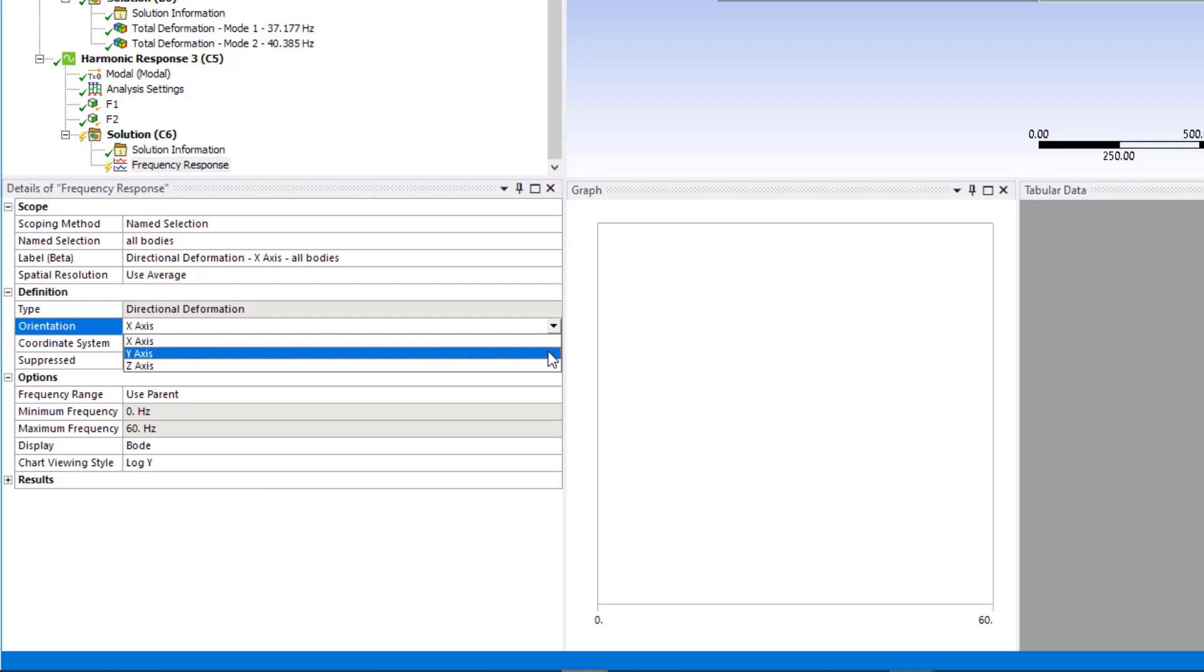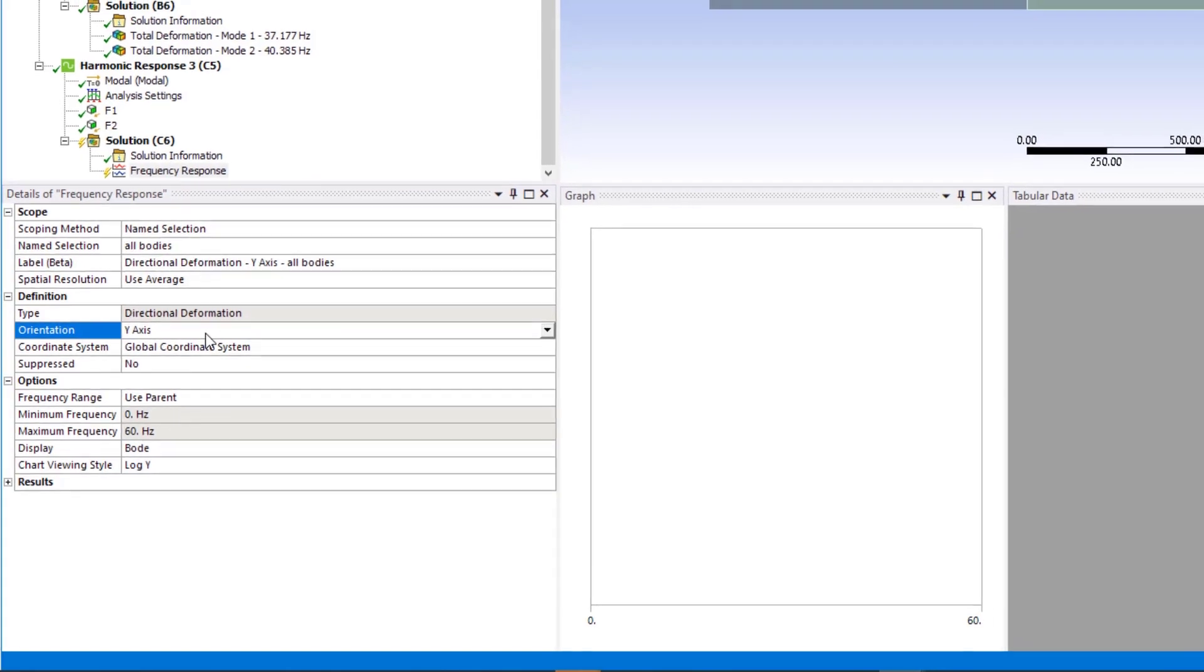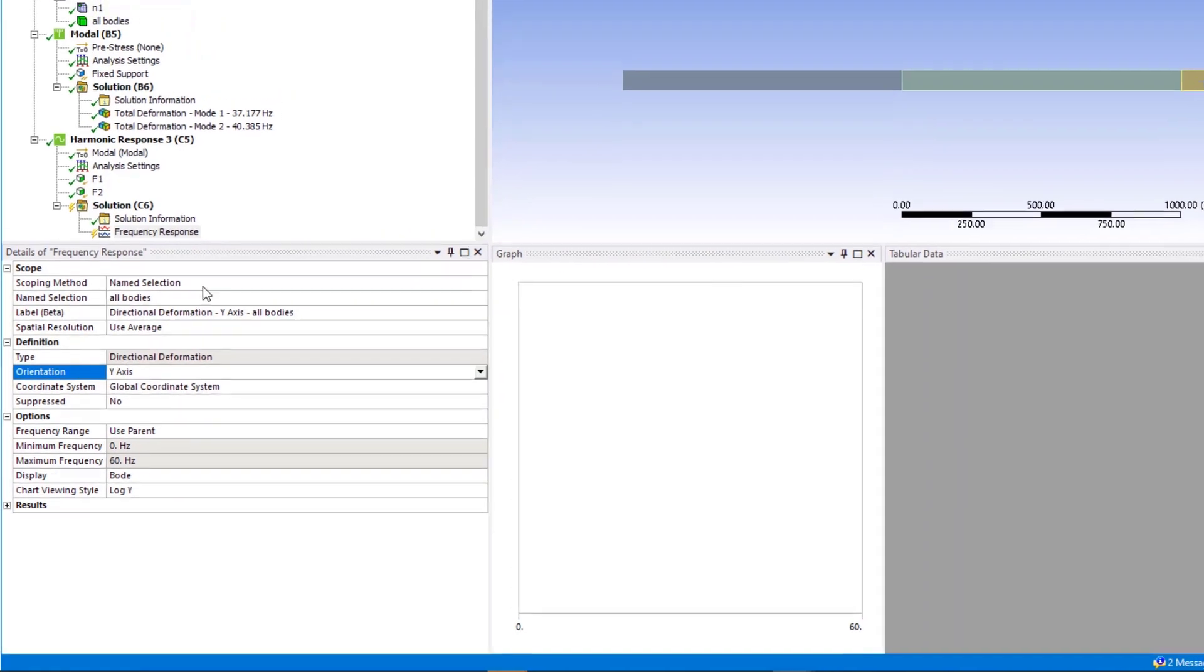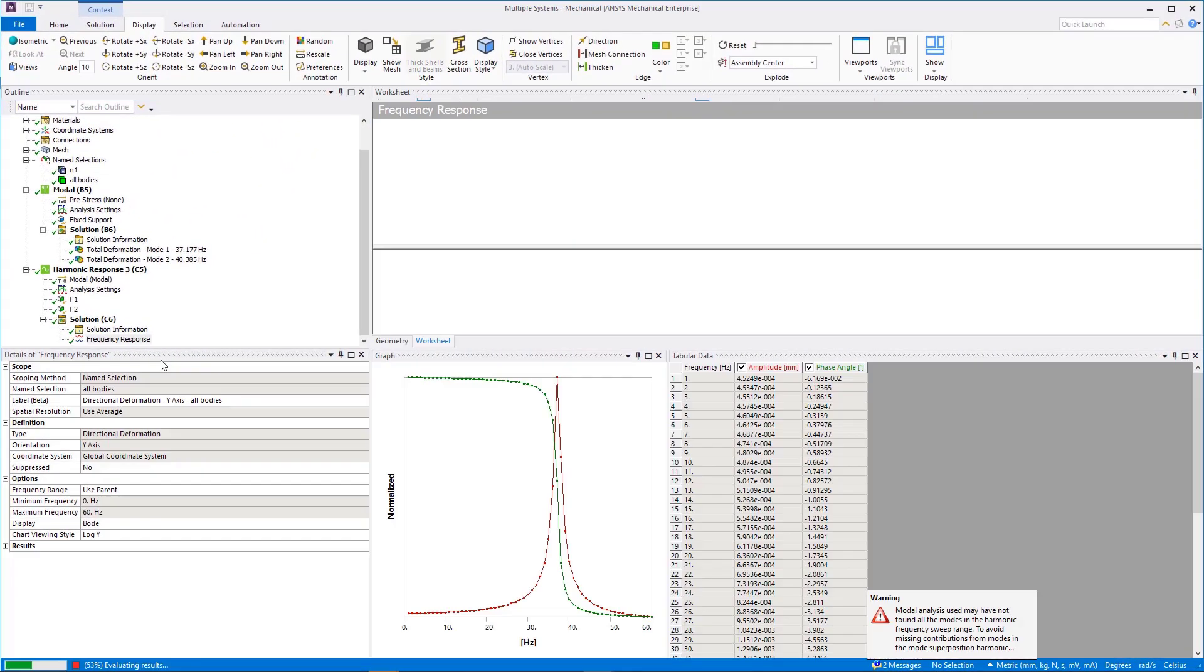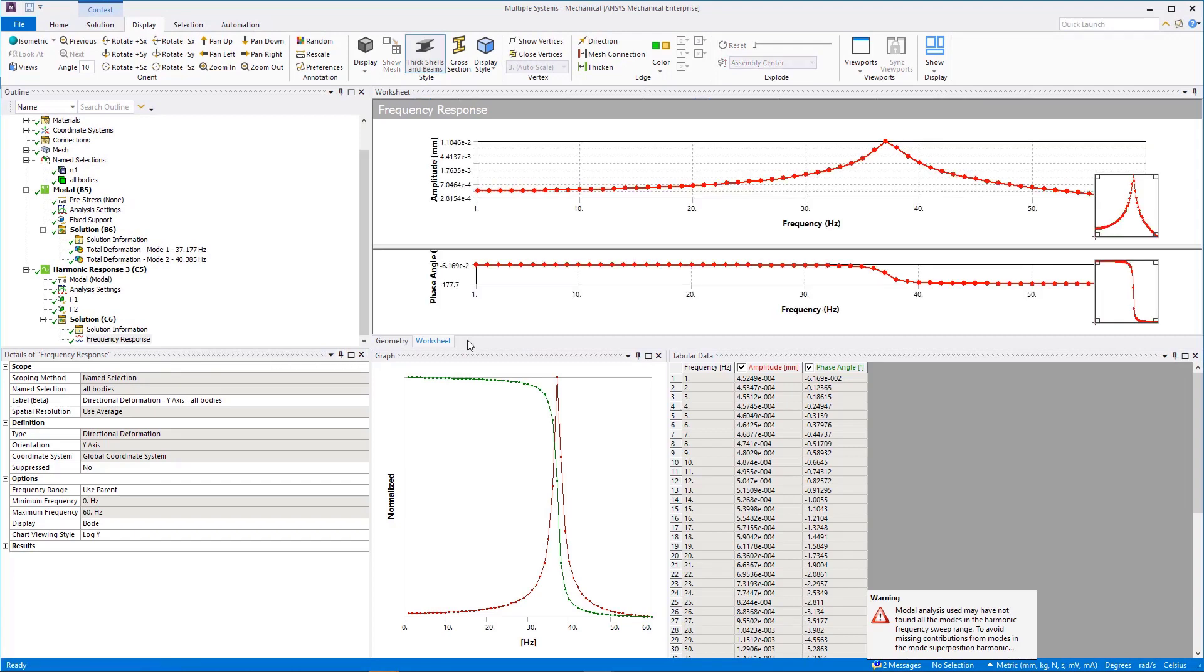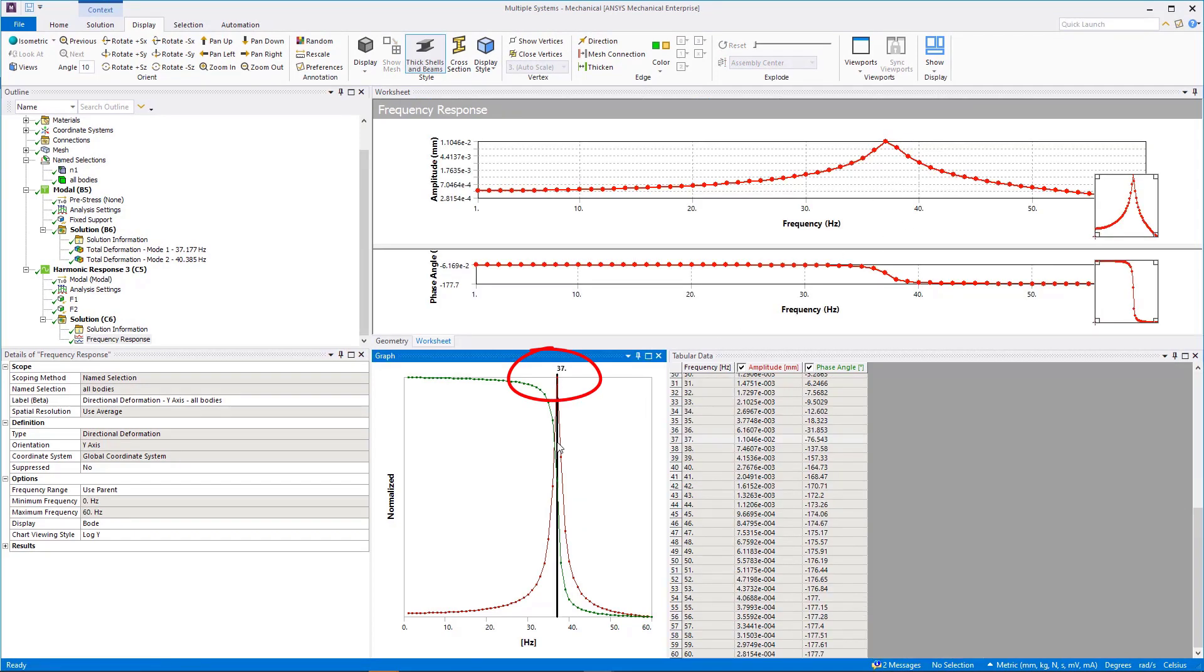Since in this application, the displacement in vertical y direction is of greatest interest, we scope deformation in vertical direction on entire geometry. Notice how peak displacement occurs at the first natural frequency of 37 Hz.